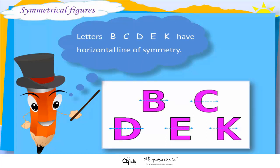Letters B, C, D, E, K have horizontal line of symmetry.